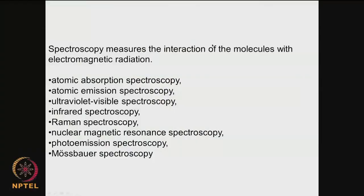There are many spectroscopies used in biology. Spectroscopy measures the interaction of molecules with electromagnetic radiation. Types include: atomic absorption spectroscopy, atomic emission spectroscopy, UV-visible spectroscopy, infrared spectroscopy, Raman spectroscopy, NMR (nuclear magnetic resonance), photo emission spectroscopy, and Mössbauer spectroscopy. In biomaterials, UV-visible and IR are used most heavily. IR is used to look at functional groups; UV-visible is used quite a lot with biomolecules. NMR is mostly used by synthetic organic chemists to identify and characterize products. Atomic absorption is used to determine various metallic elements present in a material.